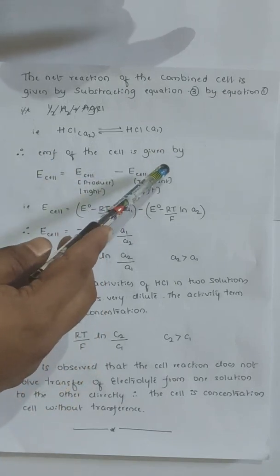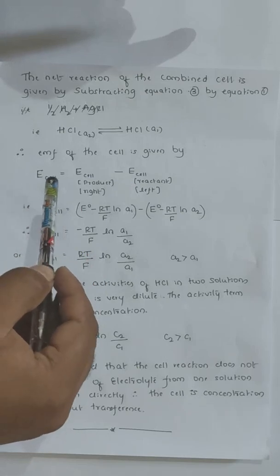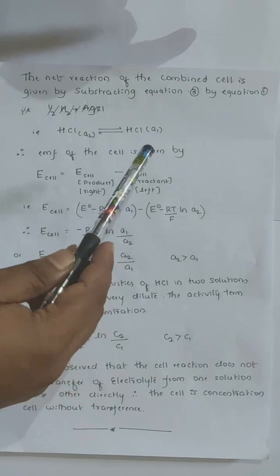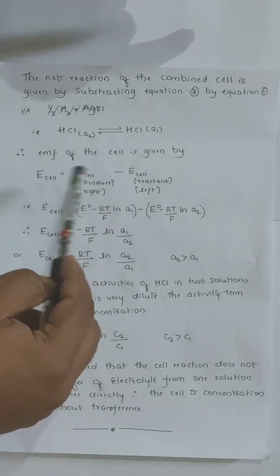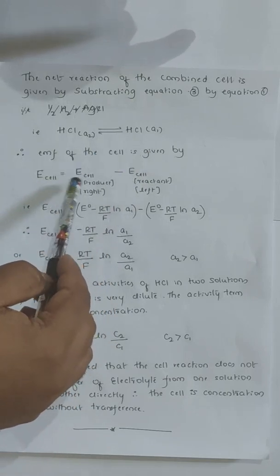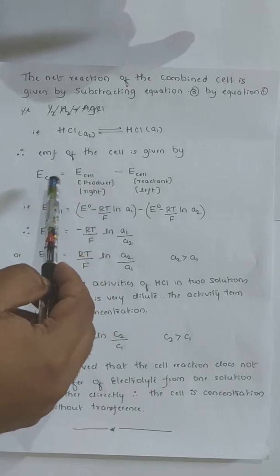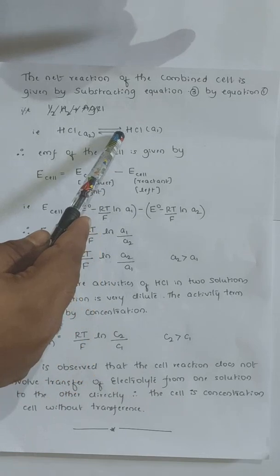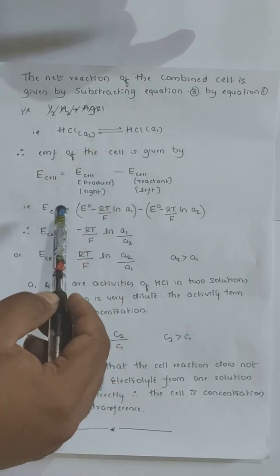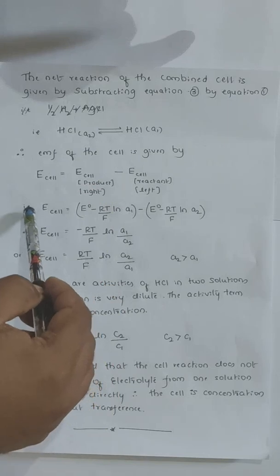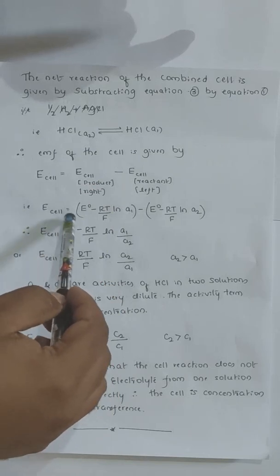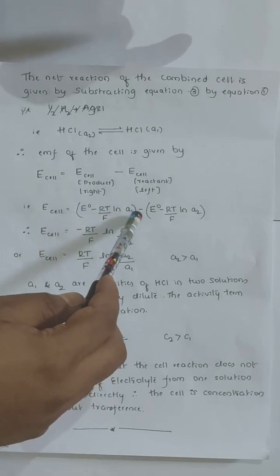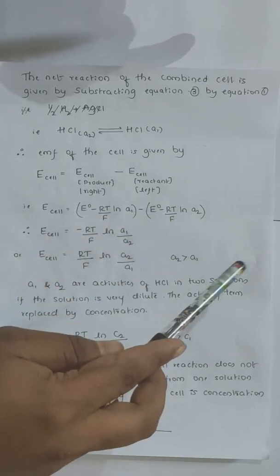The EMF of the combined cell is given by E cell equals E right side minus E left side. The EMF of the right-side cell at activity A1 is E⁰ minus RT/F ln(A1). Therefore, E cell equals (E⁰ minus RT/F ln(A1)) minus (E⁰ minus RT/F ln(A2)), which simplifies as we take RT/F as common.